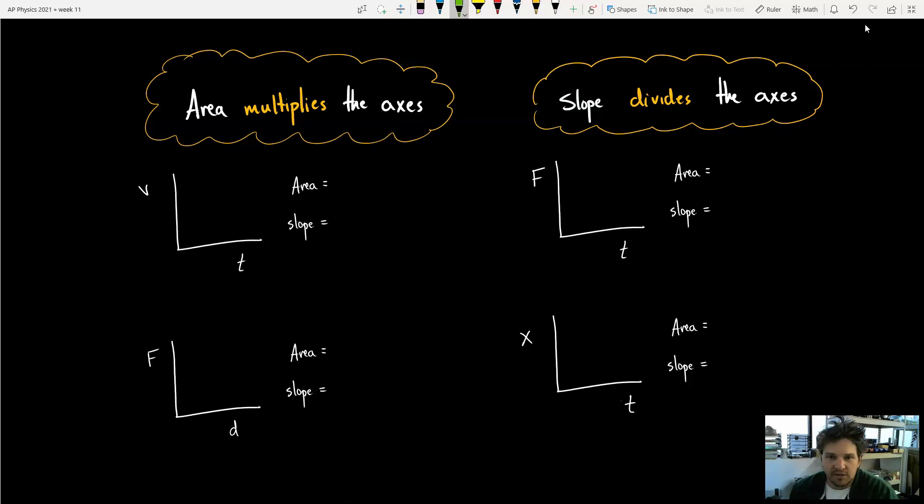So for example, this is a velocity time graph right here. If I do the area, that's just multiplying velocity times time. Now, if there's weird shapes, like if you need to find the area of a triangle or something, then you just do the area of a triangle, one half those two things multiplied together. But simply just seeing that we're multiplying those two things together, that's the area.